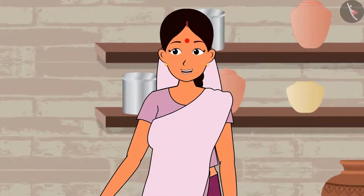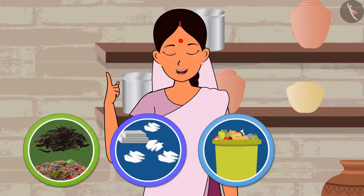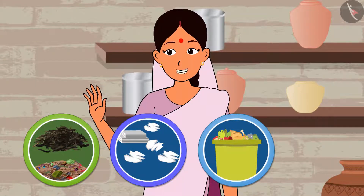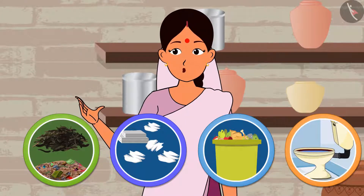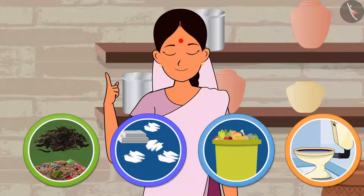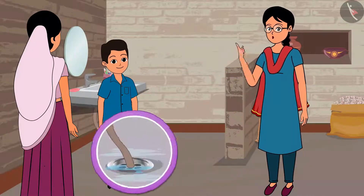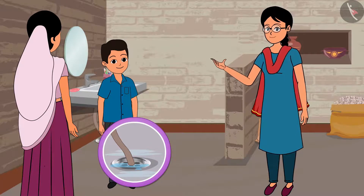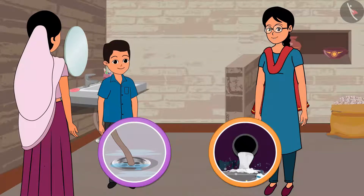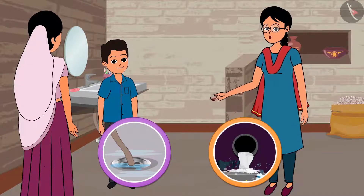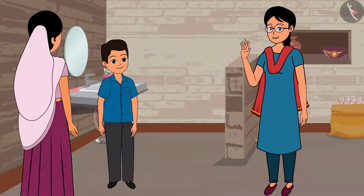Kamala, we also throw tea leaves, sanitary towels, solid foods, etc. in the dustbin. We know that if cotton or sanitary towels are thrown into the toilet there will be an obstruction in the drainage. You are right — when the water in the drain stops flowing, it is difficult for oxygen to enter the sewage water. Oxygen is important for the natural process of decomposition. Everything is fine here in this house; I'll go to Lata's house now.